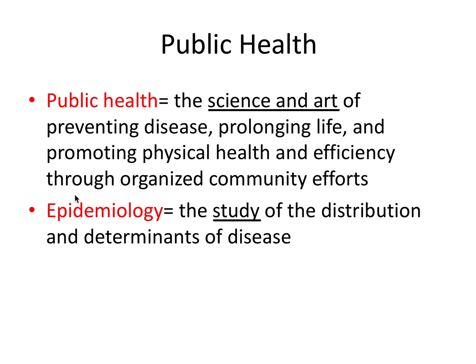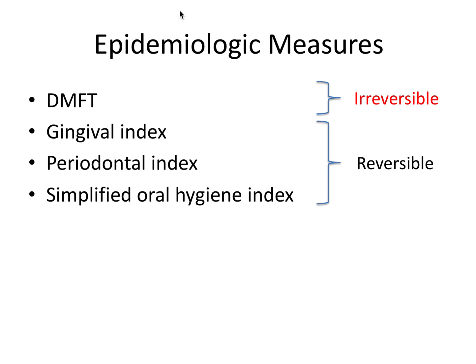Epidemiology is essentially a branch of public health, and it's the study of the distribution and determinants of disease. As part of these epidemiologic studies, there are certain measures or indices that are used in both clinical practice and in the research literature as quantitative measurements to measure the prevalence of disease in a population. So these are DMFT, gingival index, periodontal index, and simplified oral hygiene index.